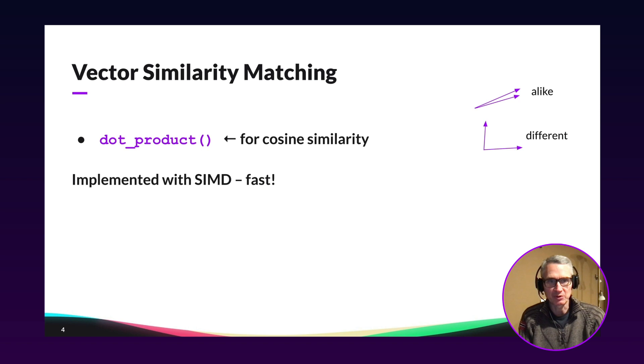So in SingleStore, you can do vector similarity matching with a built in function we provided called dot product. And this allows you to do a cosine similarity metric between two vectors. So if your vectors are normalized to length one, then if you do the dot product between them, you'll get the cosine of the angle between the two vectors. So if you look on the right here, there's a couple of vectors here that are a lot alike because they're pointing in the same direction. So the angle between them is very small. And therefore, the cosine of that angle will be close to one. So you get a high matching score when you use the dot product function.